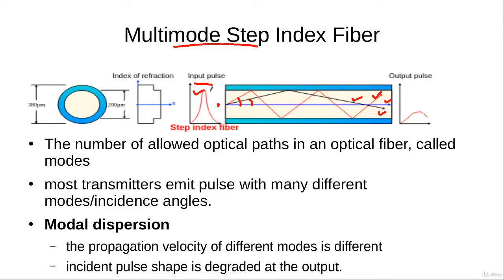The pulse that had a certain shape at the transmitter becomes distorted at the receiver, and this distortion is called dispersion. These different paths are called different modes, and since this dispersion is due to different modes, it is called modal dispersion. One of the main disadvantages of the multimode step index fiber is that it suffers from modal dispersion, as it allows many different modes.